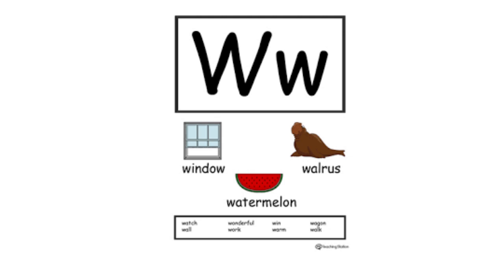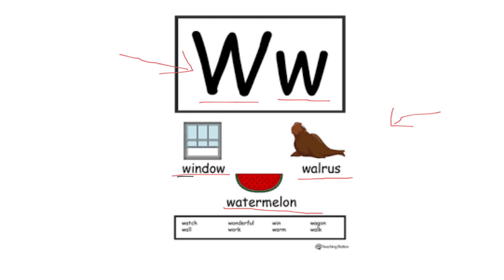Okay boys and girls, let's start with the letter W. Do you remember the sound that the letter W makes? Wuh, wuh. Now look at the pictures and try to name them for me. Window, watermelon — did you hear the W sound at the beginning of each word? Window, walrus, watermelon.